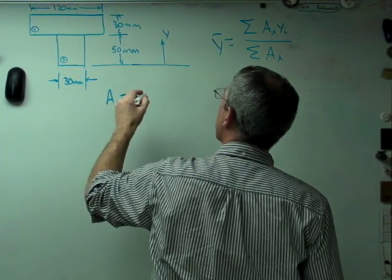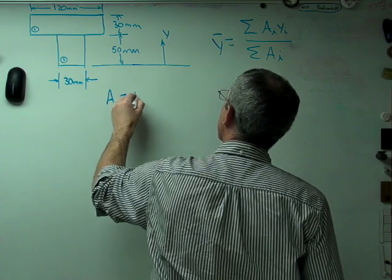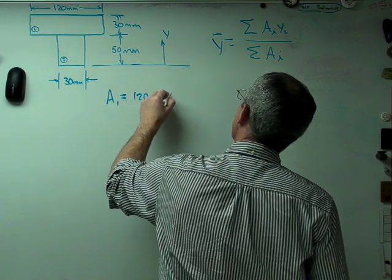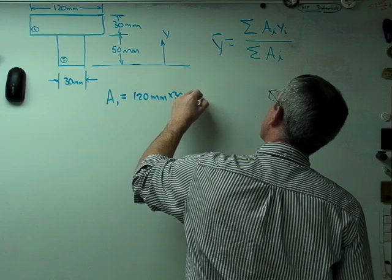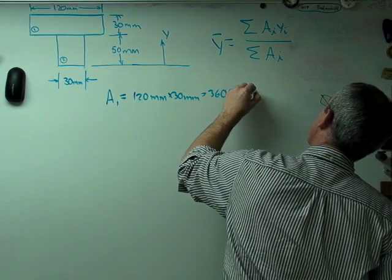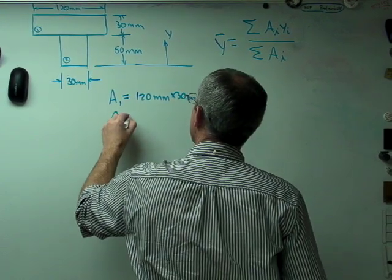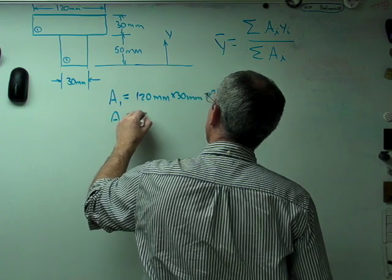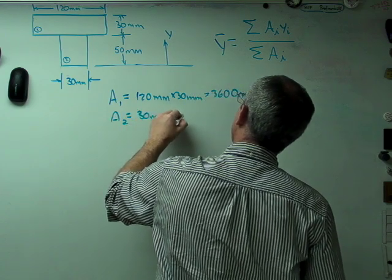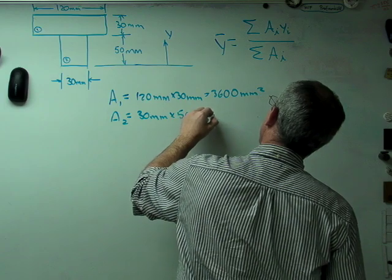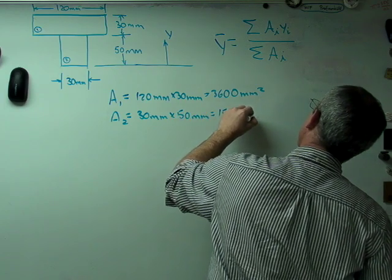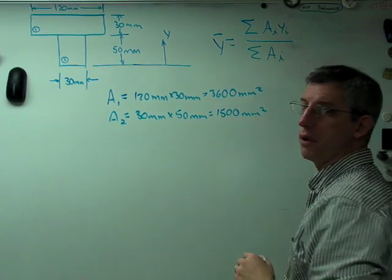A1 is just the area of box 1. That's 120 millimeters by 30 millimeters, which equals 3600 millimeters squared. A2 is 30 millimeters by 50 millimeters, which is 1500 millimeters squared. So far so good.